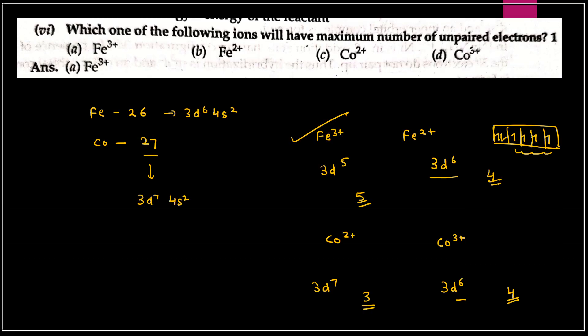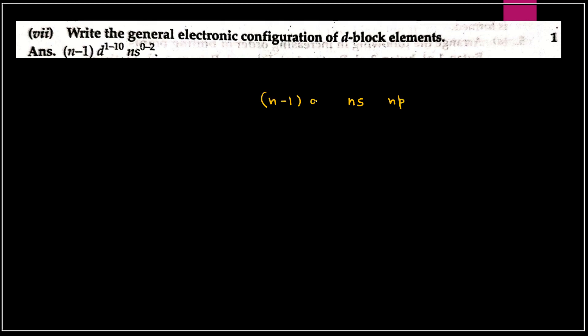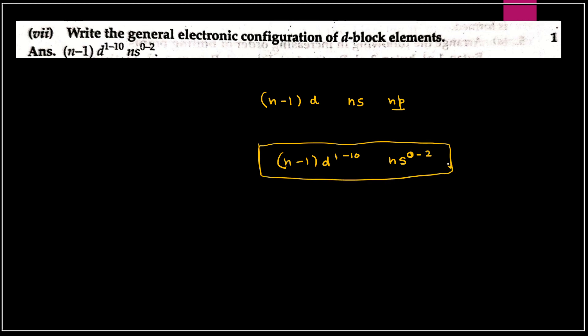Question number seven: general electronic configuration of D-block elements. Yeh aapko hamesha yaad rakhna hai beta — it is (n-1)d^1-10 ns^0-2. D-block elements mein (n-1)d mein electrons 1 se 10 tak aate hain aur ns mein 0 se 2 tak. Yahi general electronic configuration of D-block elements hai. Clear hai.